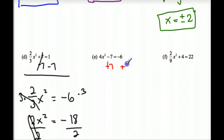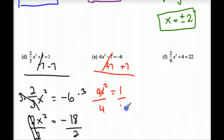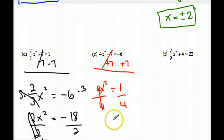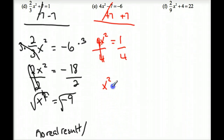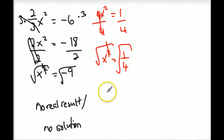Example E: Add 7 on both sides — this cancels — and 4X squared equals negative 6 plus 7, which is positive 1. Divide both sides by 4. X squared equals one-fourth. Take the square root of both sides — the square root and square cancel — and X is equal to plus or minus one-half.